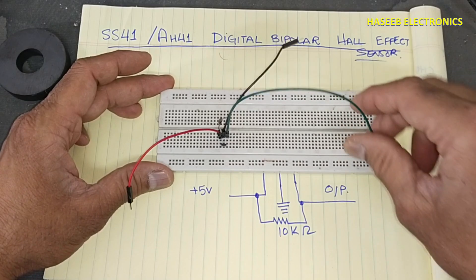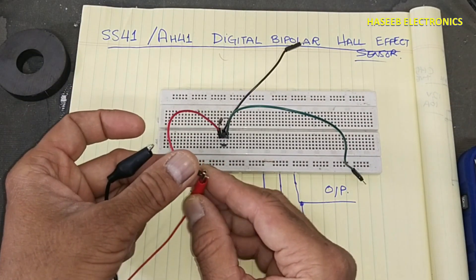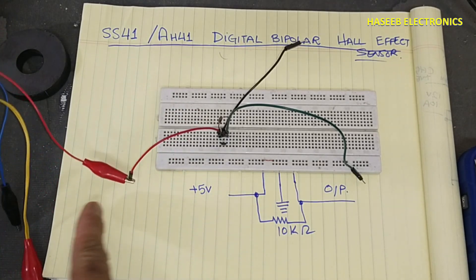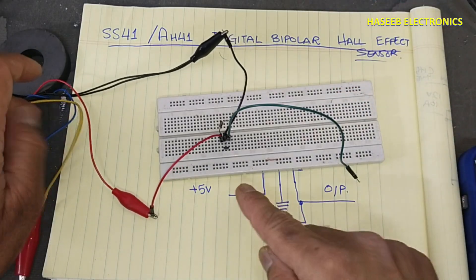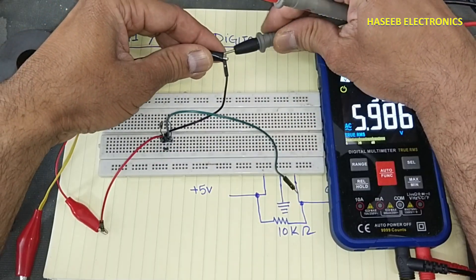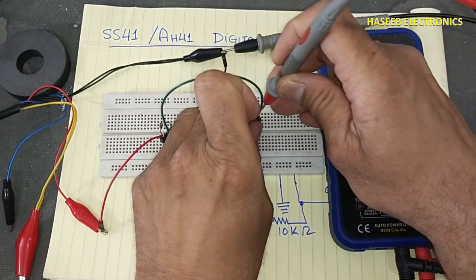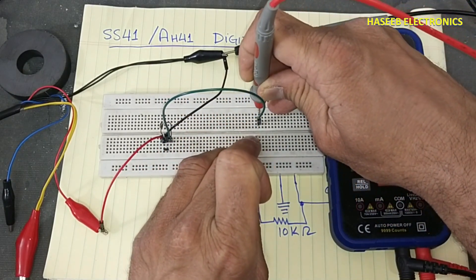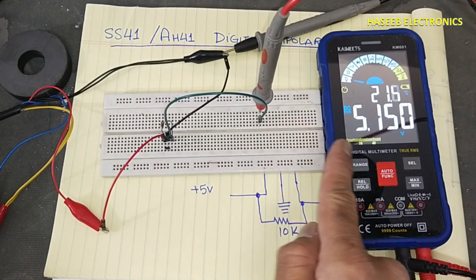Output from pin number 3. I am applying 5 volts positive supply at pin number 1, common at center pin.